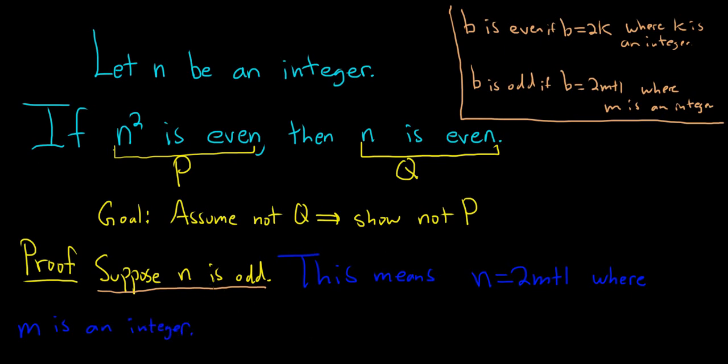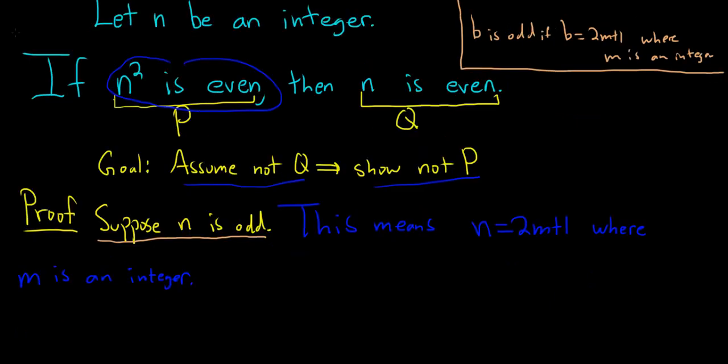So now we've exhausted, in some sense, what we've written down. We've used the fact that n is odd. Now we have to show that n squared is odd. Remember, we're assuming not q, we're showing not p. So the natural thing to do is now to look at n squared. Okay, switch to an easier to see color here.